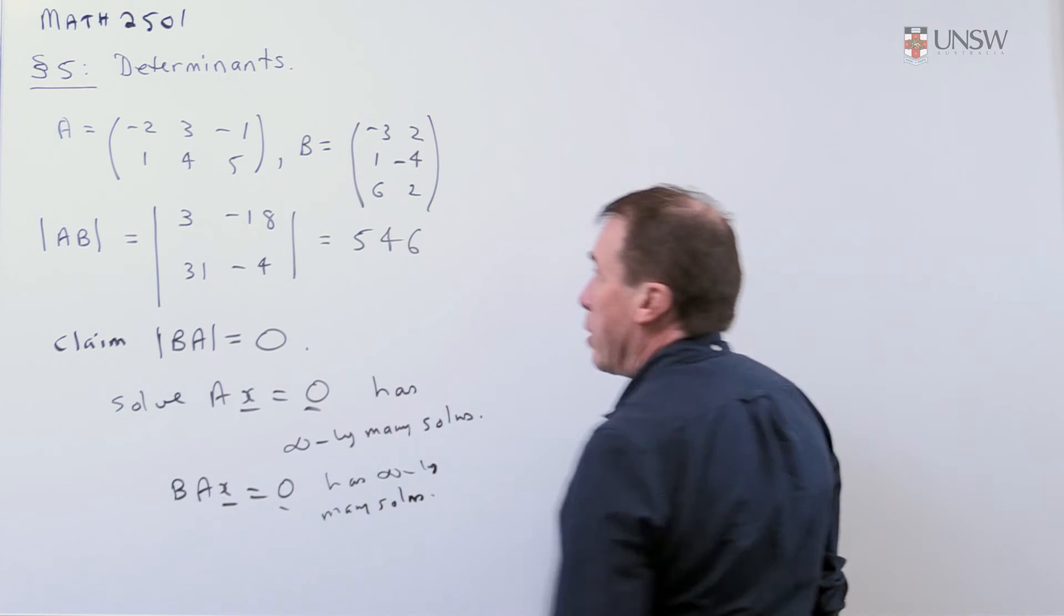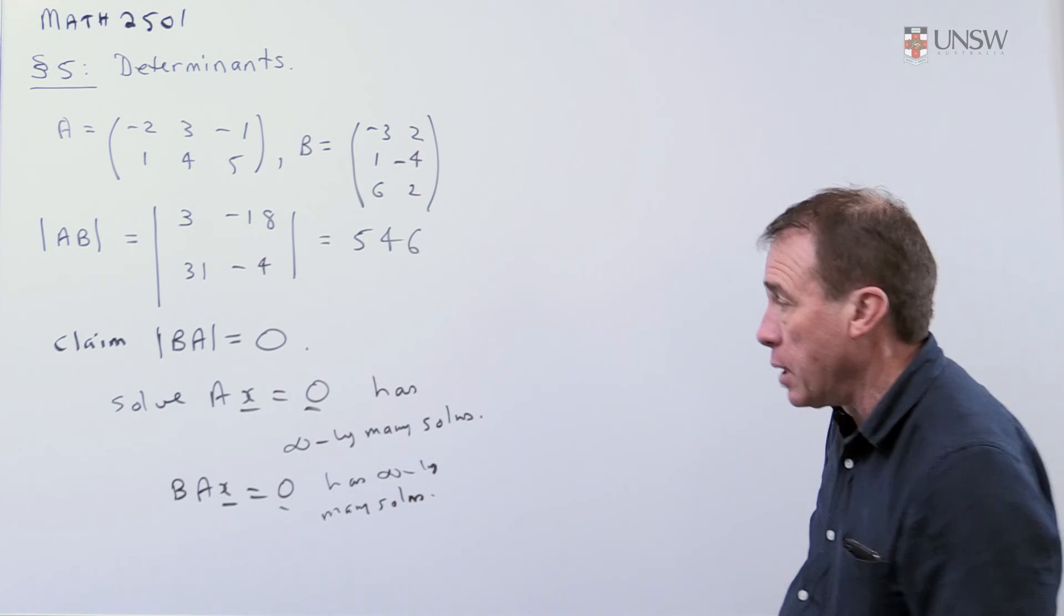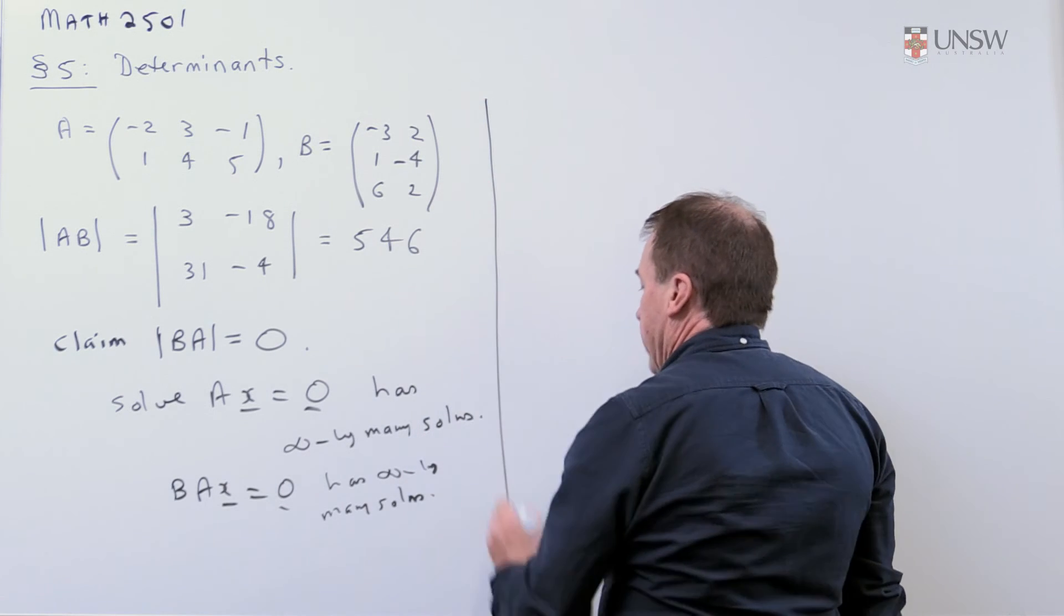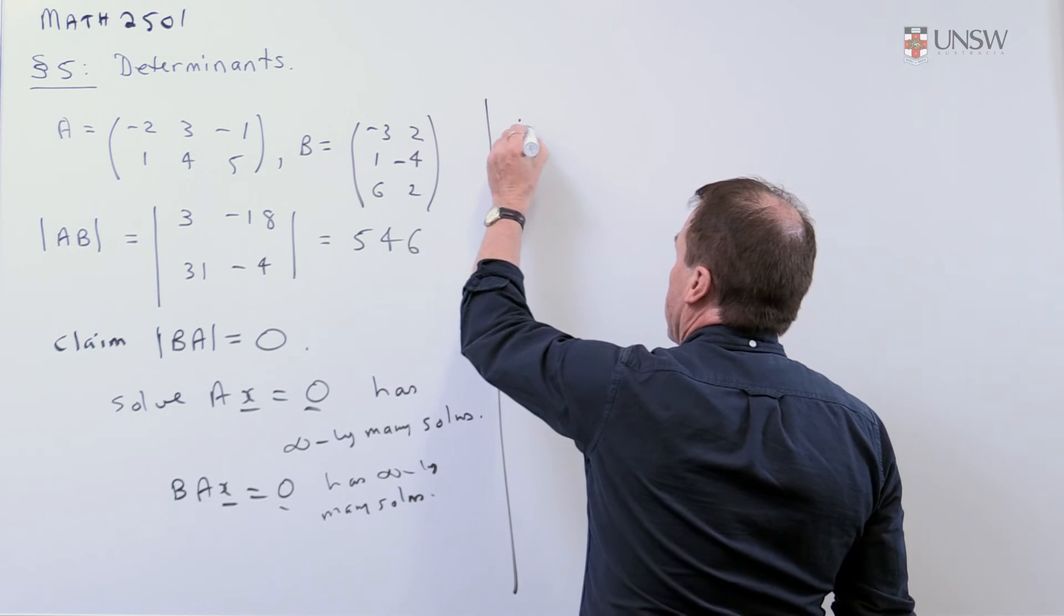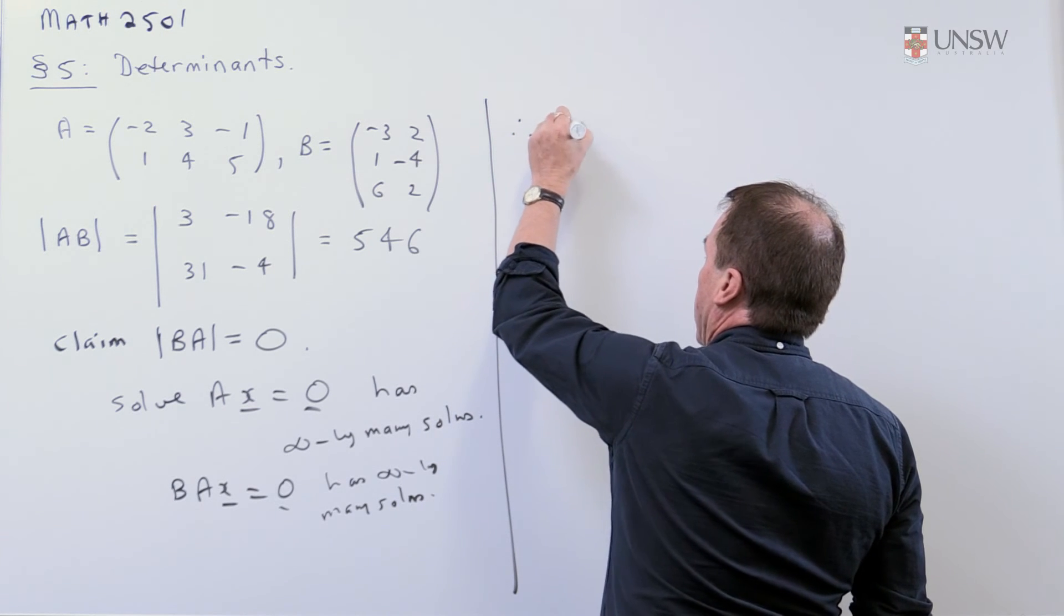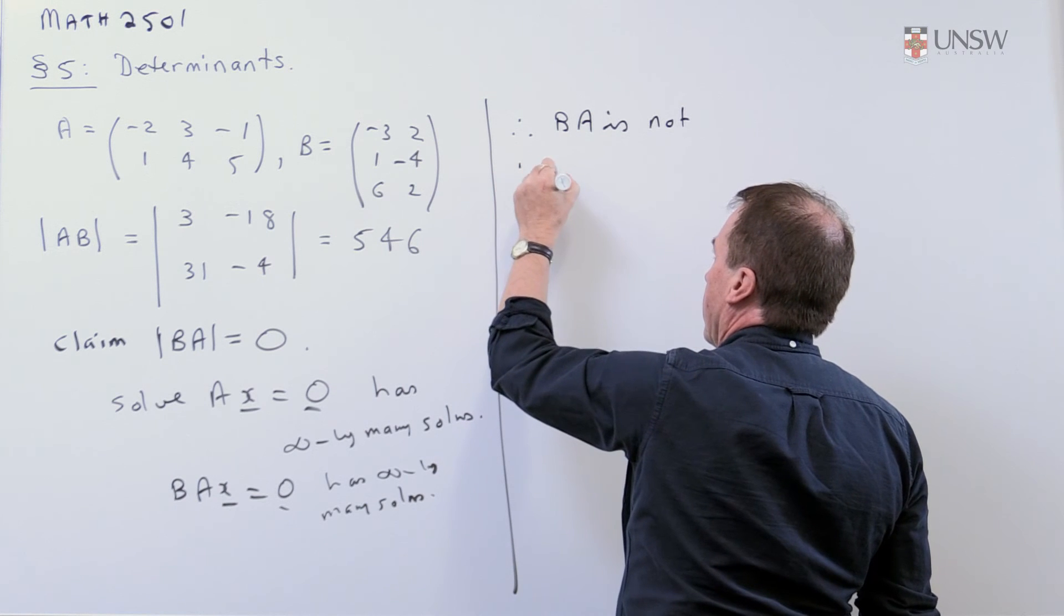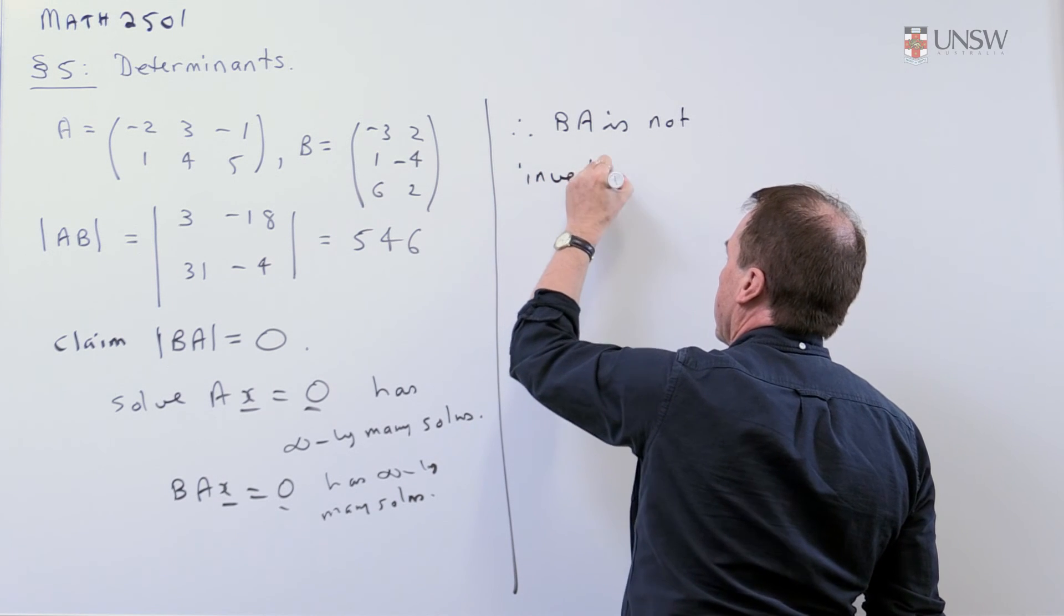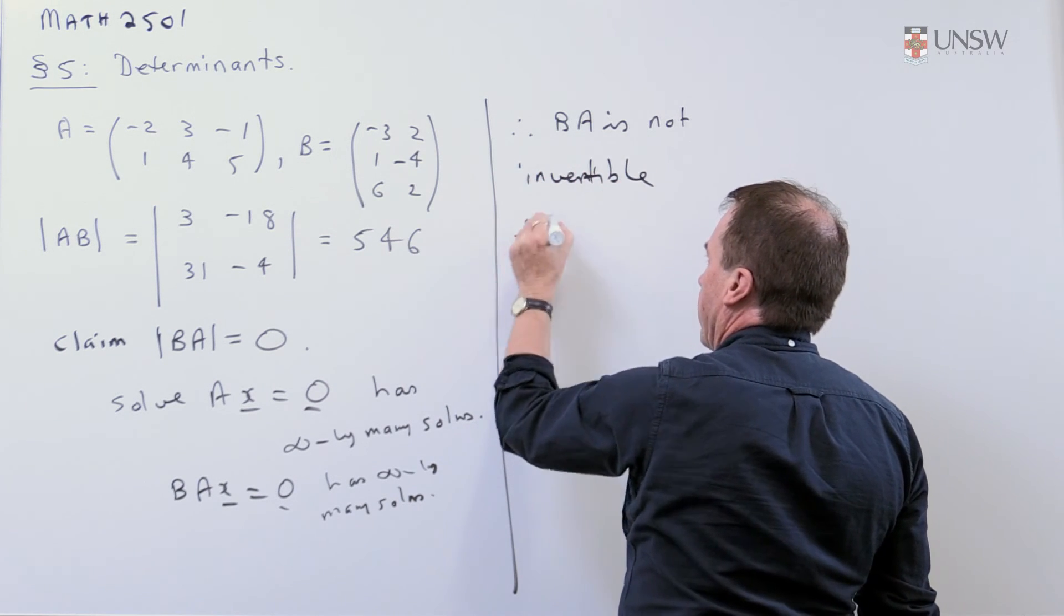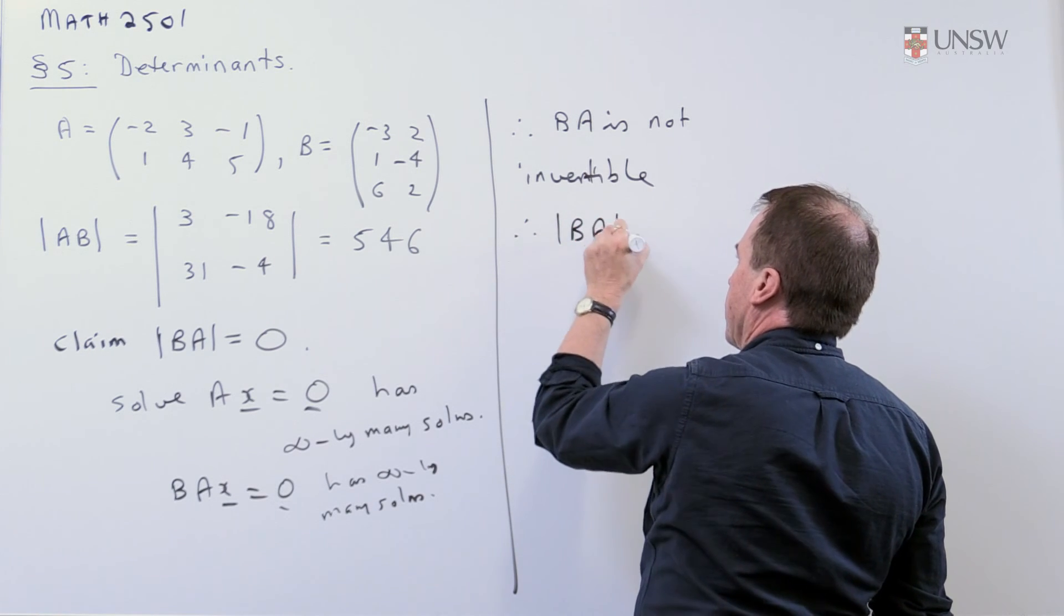And, of course, this will be a square matrix now. And, so, if this has got infinitely many solutions, therefore, that says that BA is not invertible. It has no inverse. And, therefore, that says its determinant must be zero.